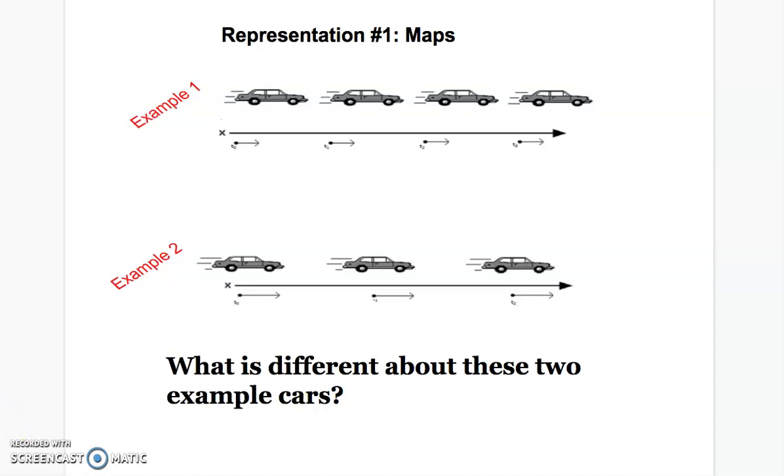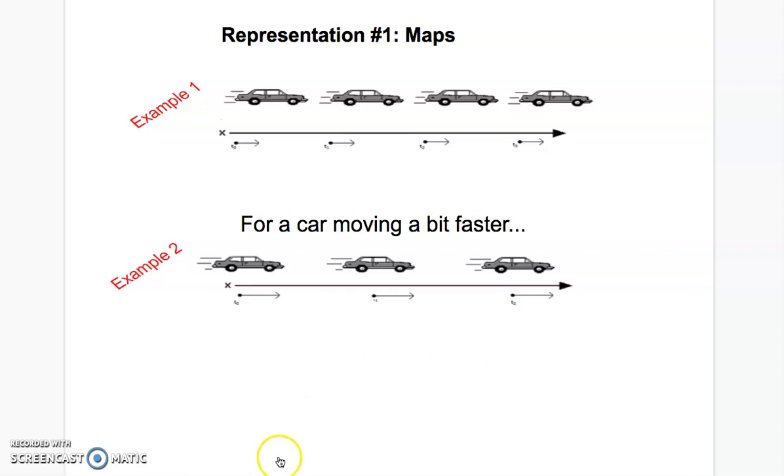What you said something like, this car is going faster in example two, you're totally right. We can see it's going faster in a couple different ways. One, it has longer arrows, so those are longer velocities. The other thing that we can notice is that each timestamp, time zero, time one, time two, they're further apart from each other. That means that it has traveled a further distance between each time than car in example one has.